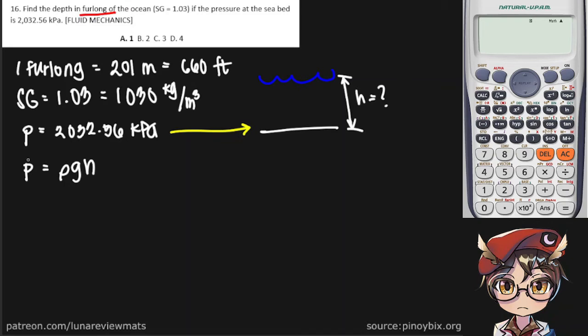Now we are given the pressure at the seabed. We also have the density of our substance, and we know the gravitational acceleration is 9.81. We don't know what the depth is. Now we can simply start putting our values in.